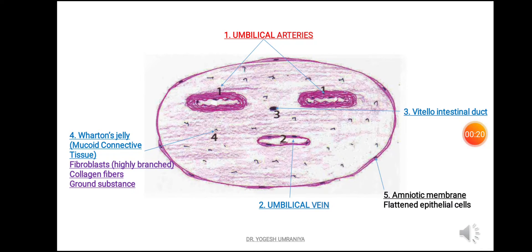The umbilical cord is a tube-like structure connecting the placenta with the fetus. Its main function is to provide oxygenated blood to the fetus as well as to remove the deoxygenated blood from the fetus.